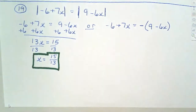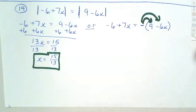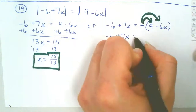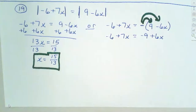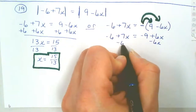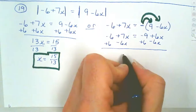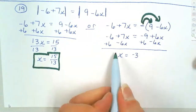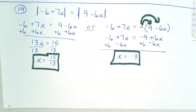For the second equation, distribute that negative through: minus 6 plus 7x equals minus 9 plus 6x. A double negative makes it positive 6. Move the 6x over and add the 6, and that leaves you with x equals negative 3. Notice we've got two solutions: 15 over 13 and negative 3. Someone will only give half of it — you have to get both.